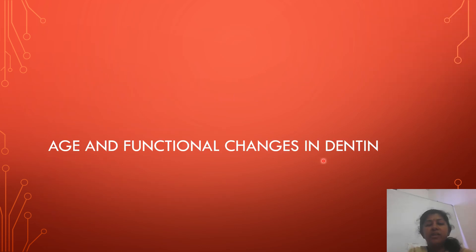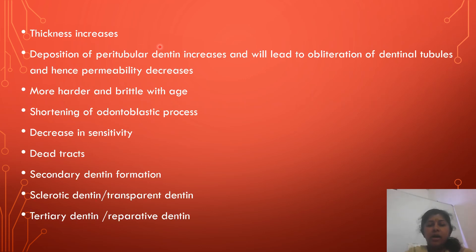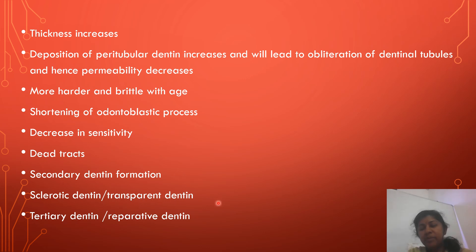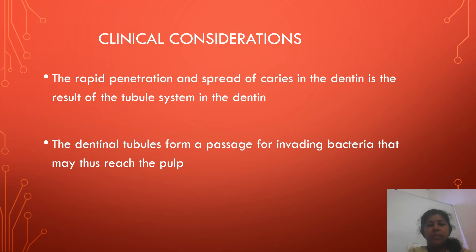As age advances, the thickness of dentine increases and deposition of peritubular dentine increases, leading to obliteration of dentinal tubules and decreased permeability of dentine. Dentine becomes harder and more brittle with age. There is shortening of odontoblastic processes, decrease of sensitivity, dead tract formation, secondary dentine formation, and sclerotic or transparent dentine formation. Tertiary dentine and reparative dentine formation also increase with age. Regarding clinical considerations, the rapid penetration and spread of caries in dentine is the result of the tubular system, as dentinal tubules form a passage for invading bacteria that may reach the pulp.